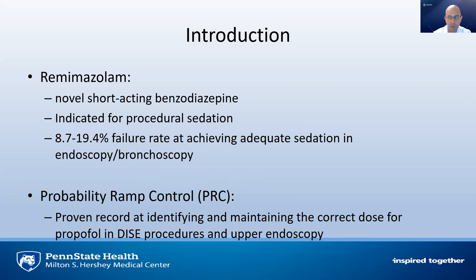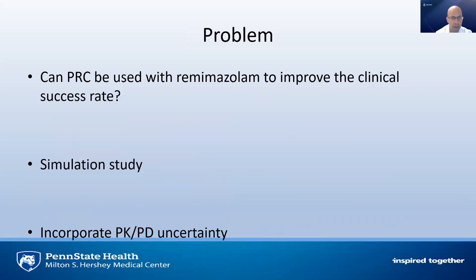We've been doing a bit of research on probability ramp control, or PRC, basically as a proven record identifying and maintaining the correct dose of propofol in TICE procedures as well as upper endoscopy. So the question is: can we use PRC with Remimazolam to improve the clinical success rate?